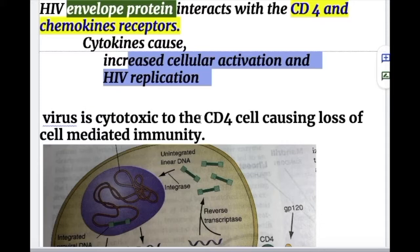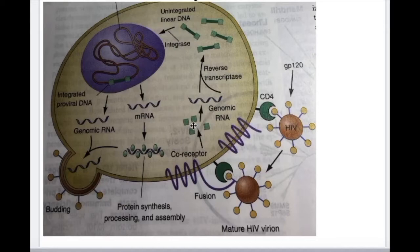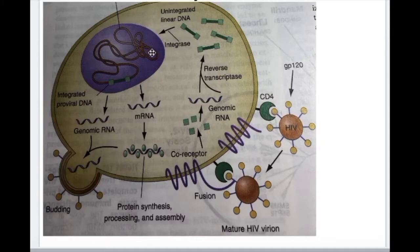The virus is cytotoxic to the CD4 cell. HIV annual protein interacts with CD4 and chemokine receptors; cytokines cause increased cellular activation and HIV replication. The virus binds to the CD4 cell receptor via GP120, fuses via GP41, and penetrates into the CD4 cell, where viral genome proteins and enzymes are released into the cytoplasm.